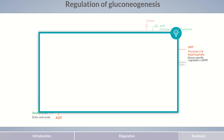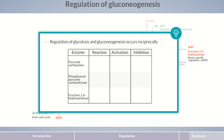Before we finish, let's summarize the most important points. Gluconeogenesis and glycolysis are coordinated so that one process is stimulated while the other is inhibited — this relationship is also called reciprocal regulation. Gluconeogenesis is regulated by its three key enzymes: pyruvate carboxylase, phosphoenolpyruvate carboxykinase, and fructose 1,6-bisphosphatase. Pyruvate carboxylase is inhibited by ADP and stimulated by acetyl-CoA. Phosphoenolpyruvate carboxykinase is also inhibited by ADP. Fructose 1,6-bisphosphatase is inhibited by AMP and fructose 2,6-bisphosphate, while activated by citrate.